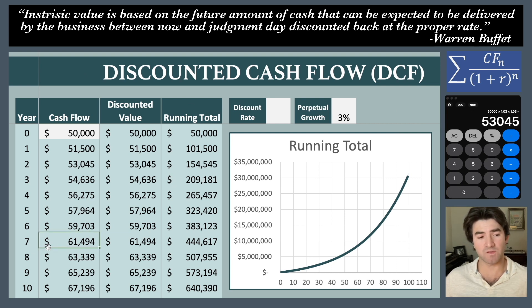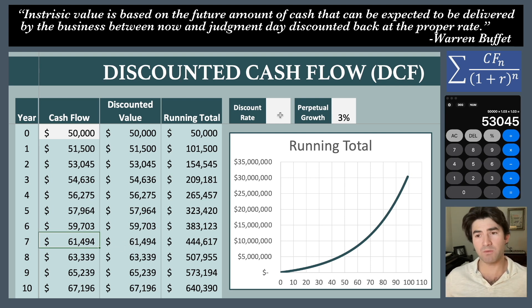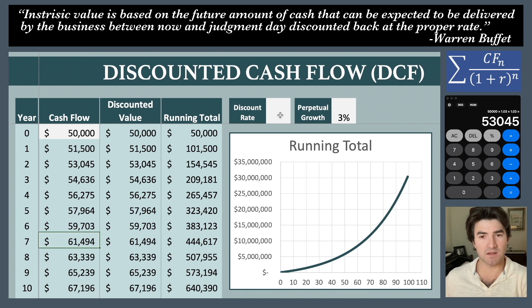The discount rate is how you address the following problem: sixty-one thousand four hundred ninety-four dollars seven years from now is not the same as sixty-one thousand four hundred ninety-four dollars today, because you could have invested that money and gotten more. What number do you use for your discount rate? I see anything from seven to fifteen percent. I use fifteen percent — I think that's on the high end and I like to be conservative — but I actually think twelve percent is more precise, so that's the example I'll use.